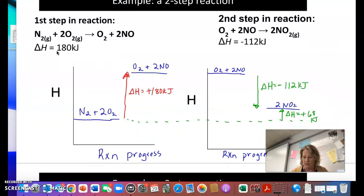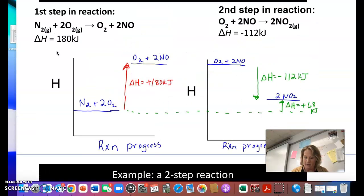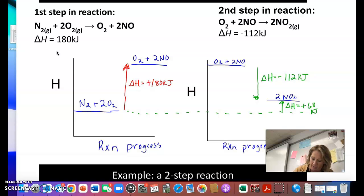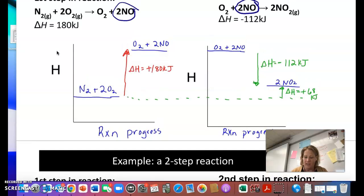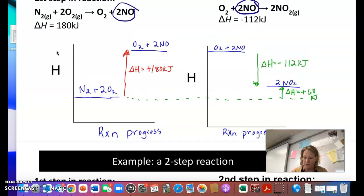This is just an example of a two-step reaction again. If you have the, you know, so here we have nitrogen plus oxygen makes oxygen plus NO. This is our intermediate because then right away again it reacts with more oxygen and gives us NO2. So you don't have to be able to do this, but this is kind of a conceptual understanding using enthalpy diagrams. The first step of the reaction is endothermic. You can see that it's endothermic. And then the second one is exothermic.